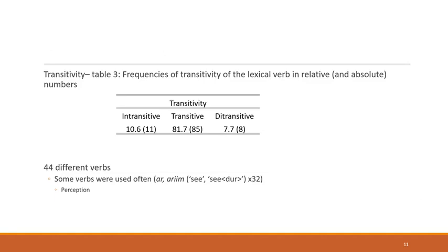The second thing I looked at was the lexical verb the hither patterned with. Looking at transitivity and frequencies — with relative numbers and absolute numbers in brackets — you can see that most verbs are transitive. Only 44 different verbs were used across the 104 instances, which can be explained by the fact that some verbs were used quite often. Notably, perception verbs appear quite frequently with the hither. For example, the verbs 'ar' and 'arim' — 'see' and 'see' with the durative — are used 32 times in total. Keep this in mind because we'll come back to it.